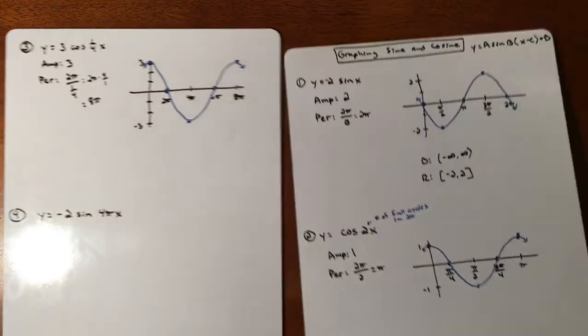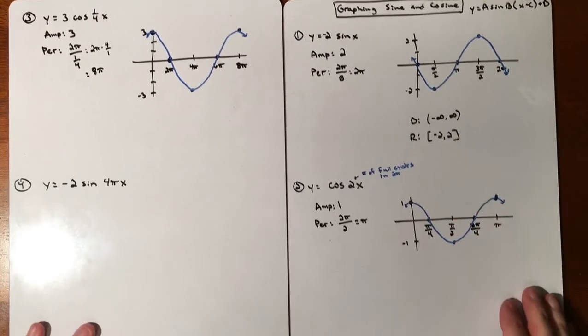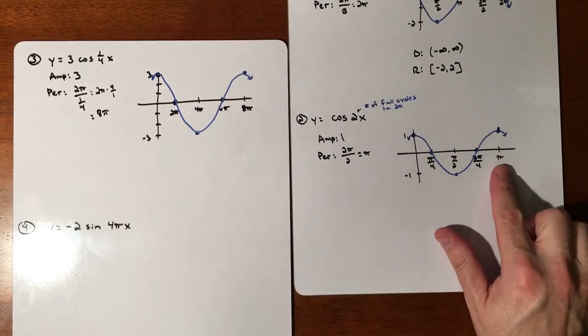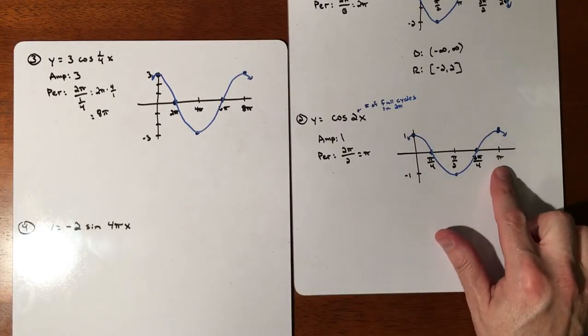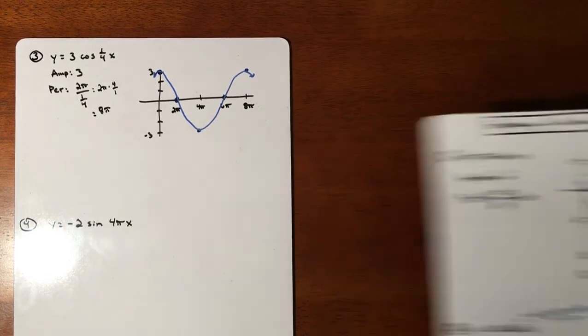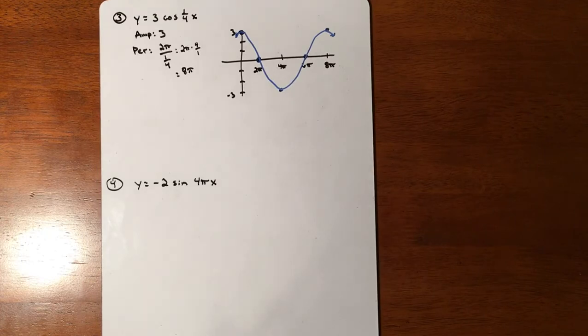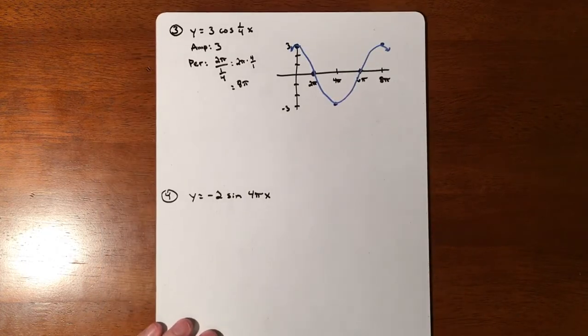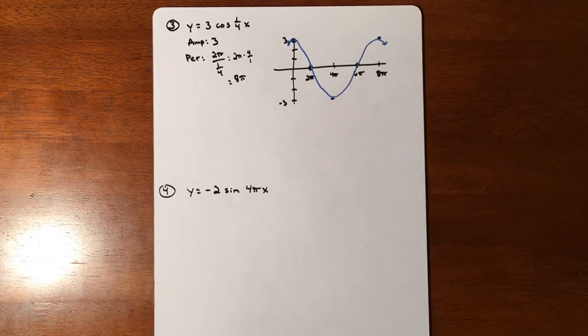And again, it looks extremely similar to the last cosine. The biggest difference is our scale stopped at π for one period versus 8π. And that's not uncommon. They should all look very similar. You just got to really dive deep into it and make sure you're understanding what the scale is.